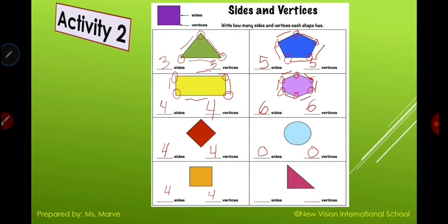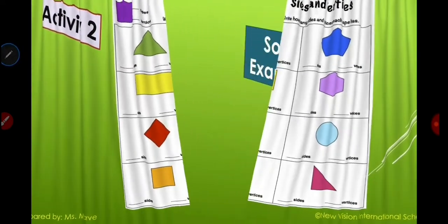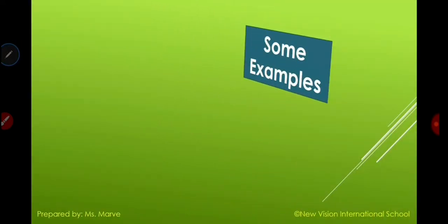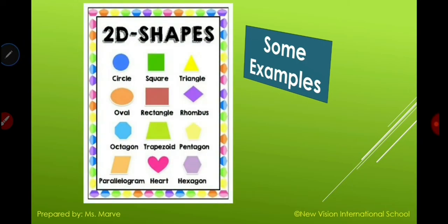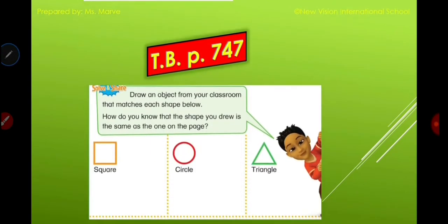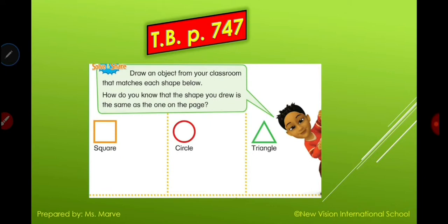Here are some examples of our lesson. Always remember that 2D shapes have sides, vertices, and they are flat. Look at the screen and try to memorize the names of the shapes. Now I want you to open your book on page 747.